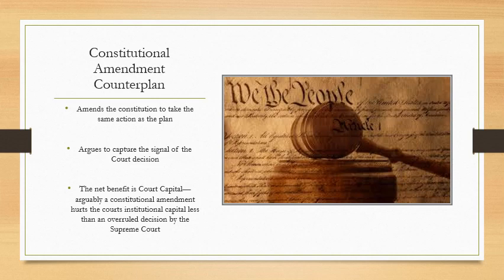The Constitutional Amendment counter-plan amends the Constitution to take the same action as the plan. This is a very common strategy against Supreme Court affirmatives and saw its heyday during the courts topic in 2006-2007 in college debate. Many people won debates by amending the Constitution and then running the court politics or court capital dis-ad. It argues to capture the signal of the court decision — an entire amendment to the Constitution would send a bigger signal internationally than a singular Supreme Court decision. We only have about 28 constitutional amendments in total, so the counter-plan would send a very powerful signal.